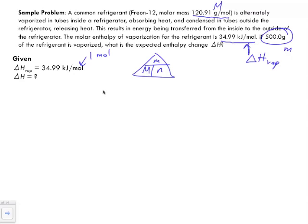To find the number of moles, we cover up number of moles and we notice that our mass is on top of our molar mass. So to find moles we divide mass by molar mass. Our mass is 500 grams, we're going to divide it by our molar mass which was given 120.91 grams per mole.